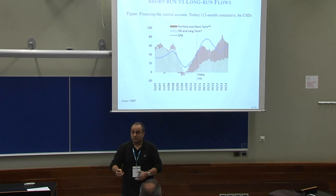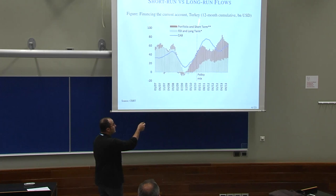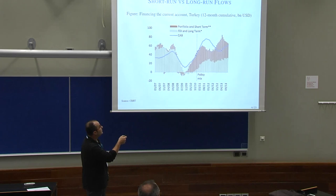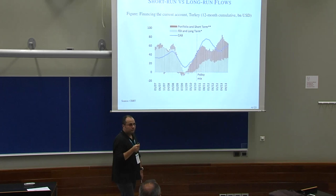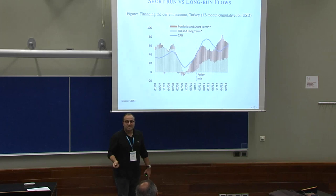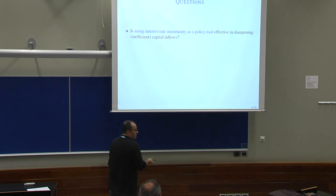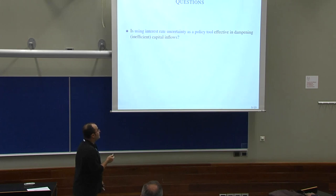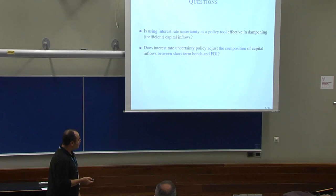The Turkish central bank showed graphs about what happened to capital flows after the introduction of the policy mix. Their graph shows the financing of the current account, with the blue line as the current account balance, yellow bars as FDI and long-term financing, and red bars as portfolio short-term flows. Their argument is that after the interest rate corridor policy, there is an increase in the fraction of FDI financing vis-à-vis portfolio inflows. But this graph coincides with the global financial crisis and could be due to mean reversion — they didn't provide a rigorous analysis.